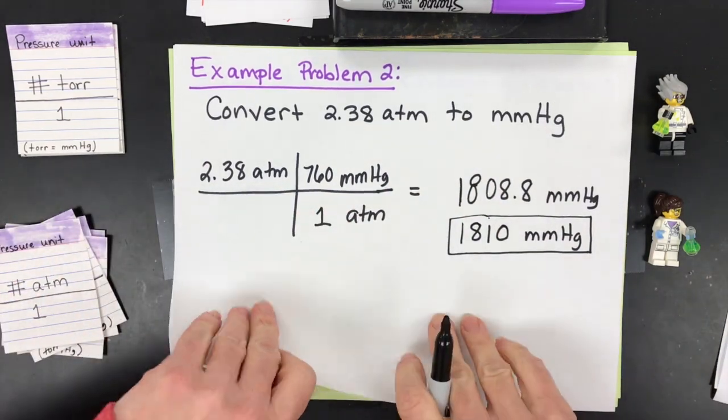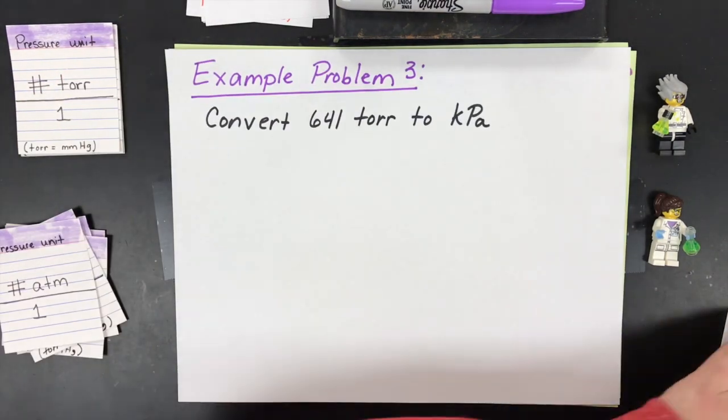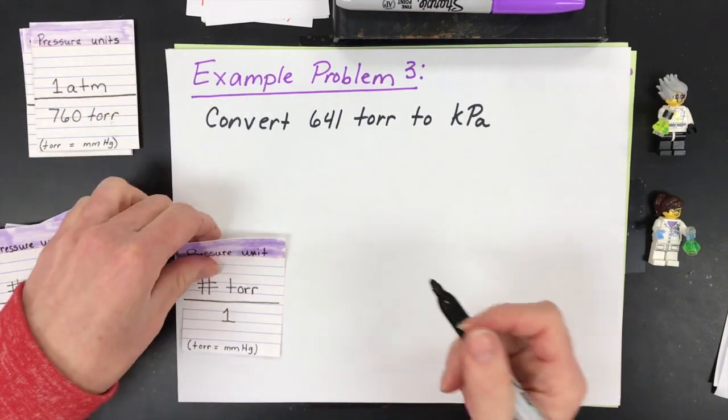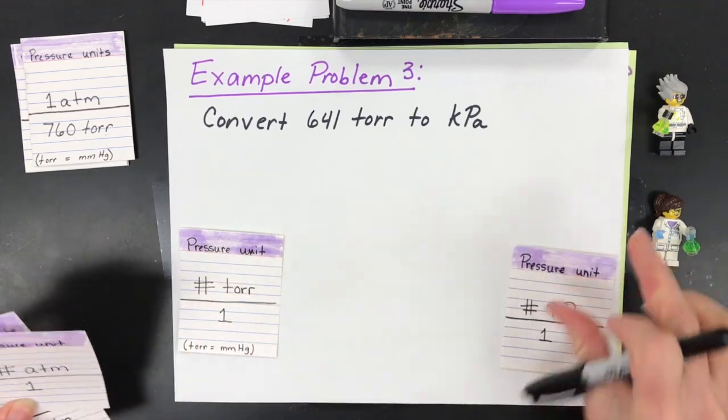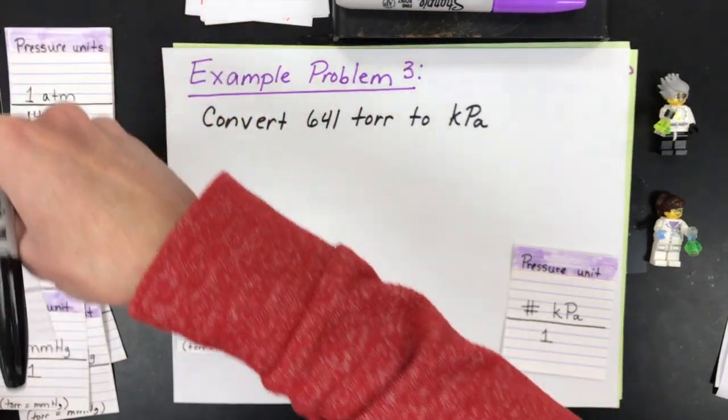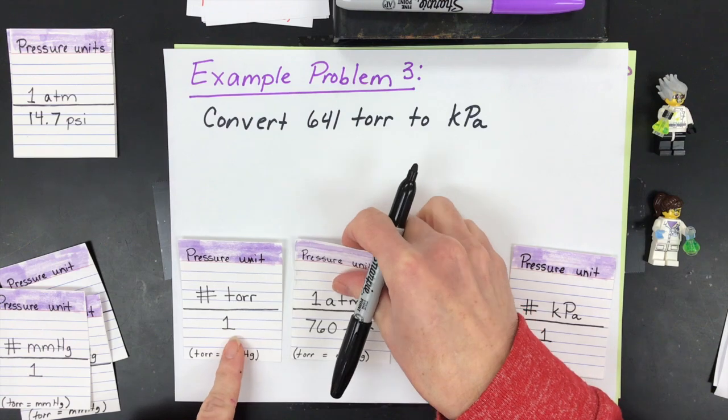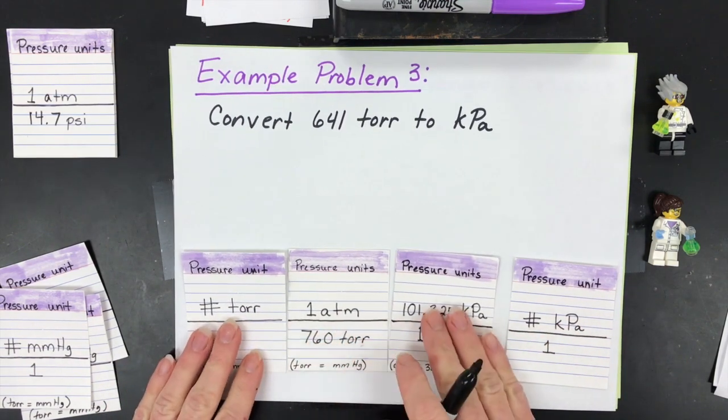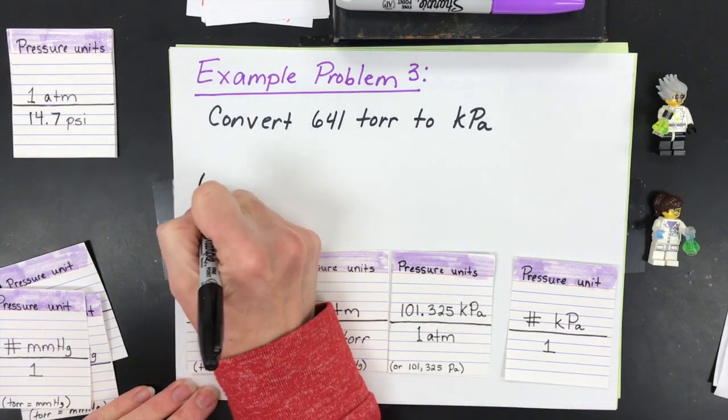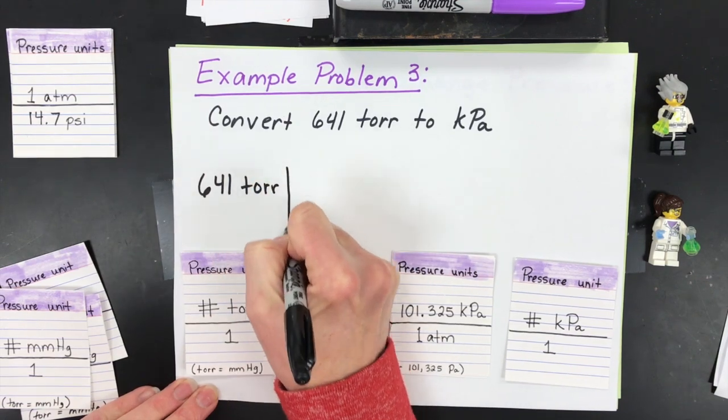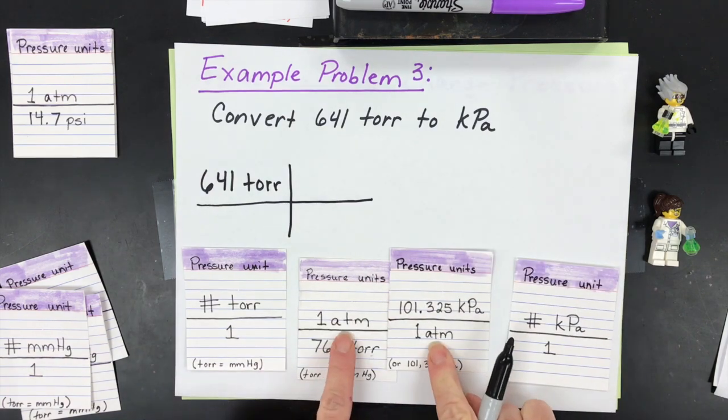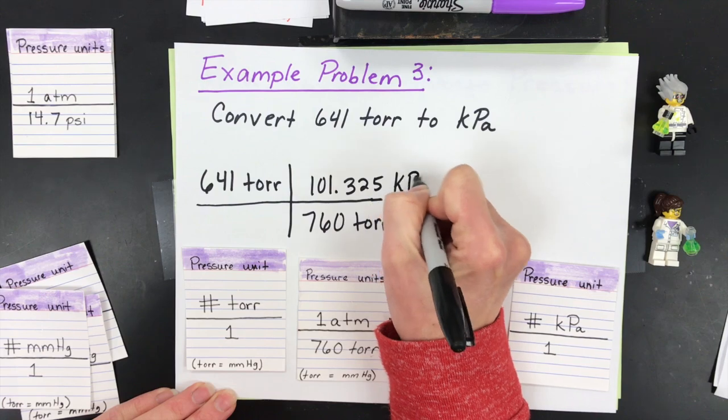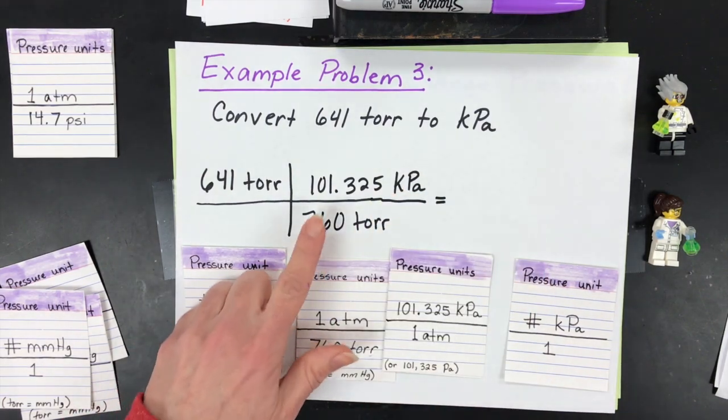On to the next calculation. Number three, this one's a little harder. This one we're going to go from torr to kPa. We're going to start with torr and want to convert to kPa. What makes this one trickier is I want to go from torr to maybe atm and then from atm to kPa, so it could need two conversions. Or the better thing to do is to put these two conversions into one. You put 641 torr, then you would say that 760 torr is the same as 101.325 kPa. It's okay, we can have a number in the denominator and in the numerator. So 641 divided by 760 times 101.325.